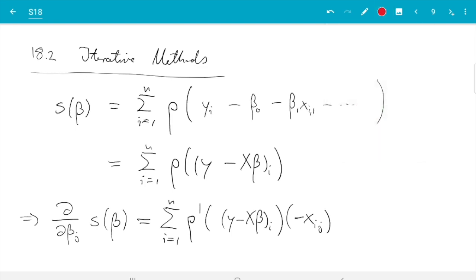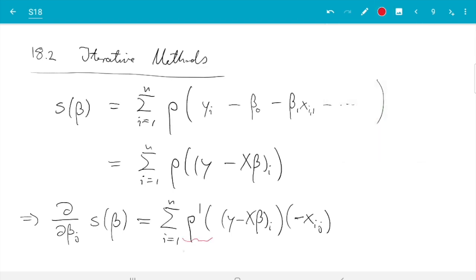One thing I do in the notes is I give a name to rho prime and that's traditional. Many authors do that, so let's call that one psi. The only other thing I do here is I put the minus on the outside. So that is minus sum i from 1 to n psi of y minus x beta i x i j. One thing we can do is plug in the estimator. We know the estimator is the global minimum of the function s, and at the minimum the derivative will be zero.